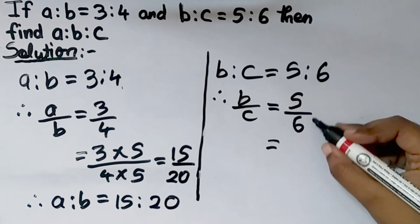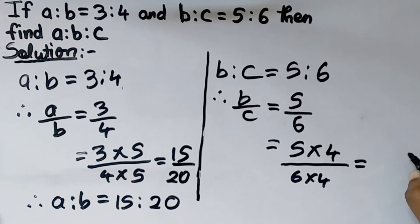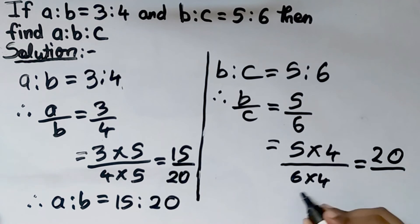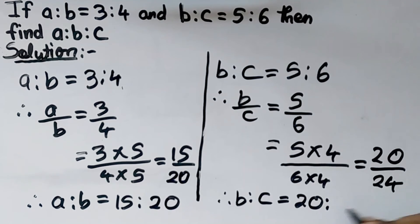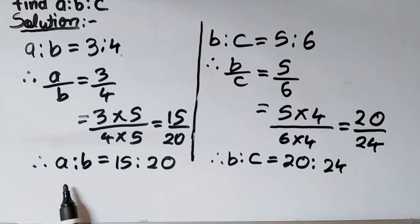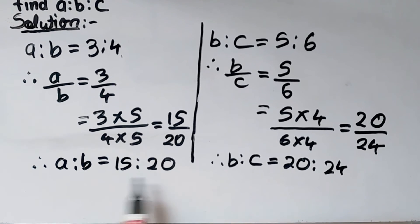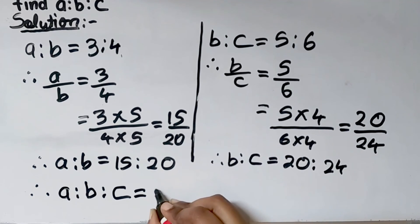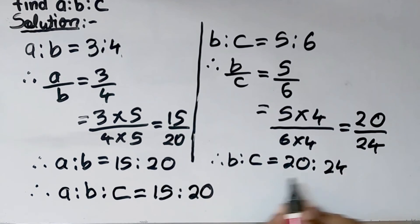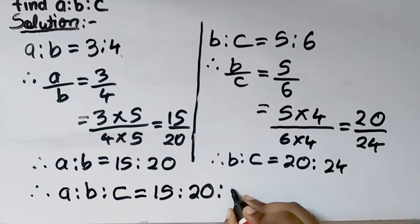We multiply the second ratio by 4: 5 into 4 upon 6 into 4, which equals 20 upon 24. Therefore B is to C becomes 20 is to 24. Now A is to B is 15 is to 20 and B is to C is 20 is to 24. The value of B is the same — 20 in both ratios. Therefore A is to B is to C equals 15 is to 20 is to 24. This is the final answer.